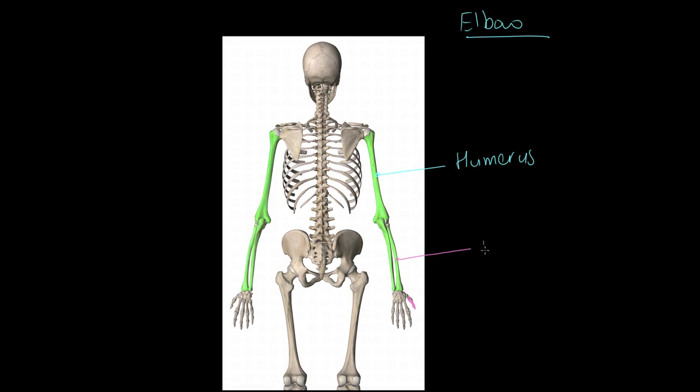We also have two bones that articulate below the elbow. The one on the thumb side is the radius. On the pinky side, this is the ulna. So we have three bones articulating at the elbow.